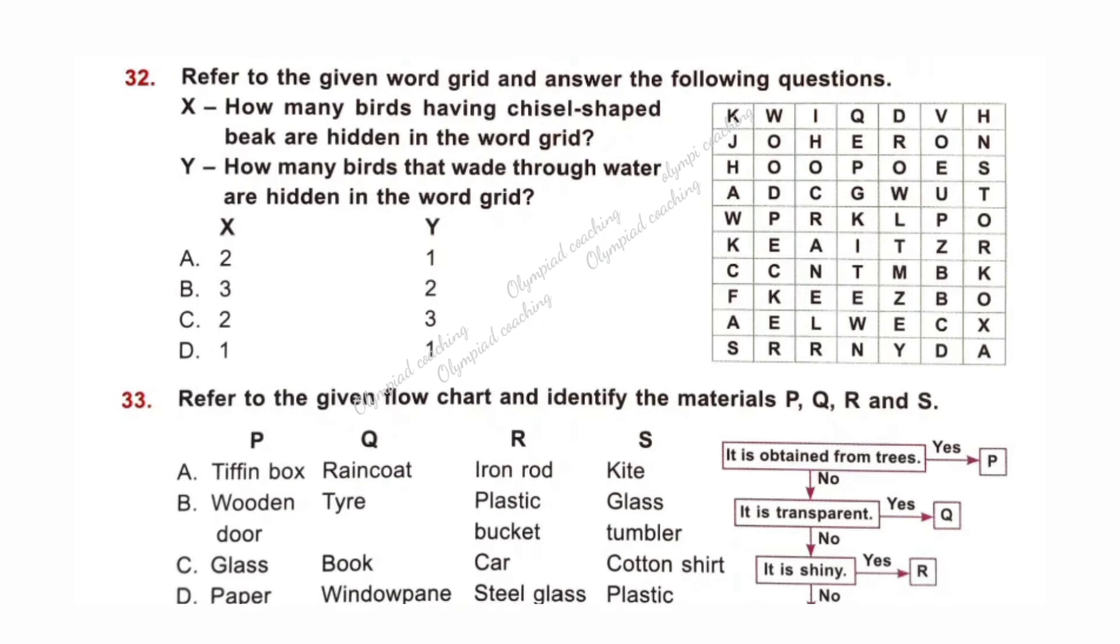Question number 32. Refer to the given word grid and answer the following question. How many birds having chisel-like beak are hidden in the word grid? Why? How many birds that wade through water are hidden in the word grid? This is woodpecker and it is hoopoe. Both can be X. So X is 2. Similarly this is heron and this is a stork and this is crane. These three birds wade through water and are hidden in word grid. So Y could be 3. Regarding this option C is correct.